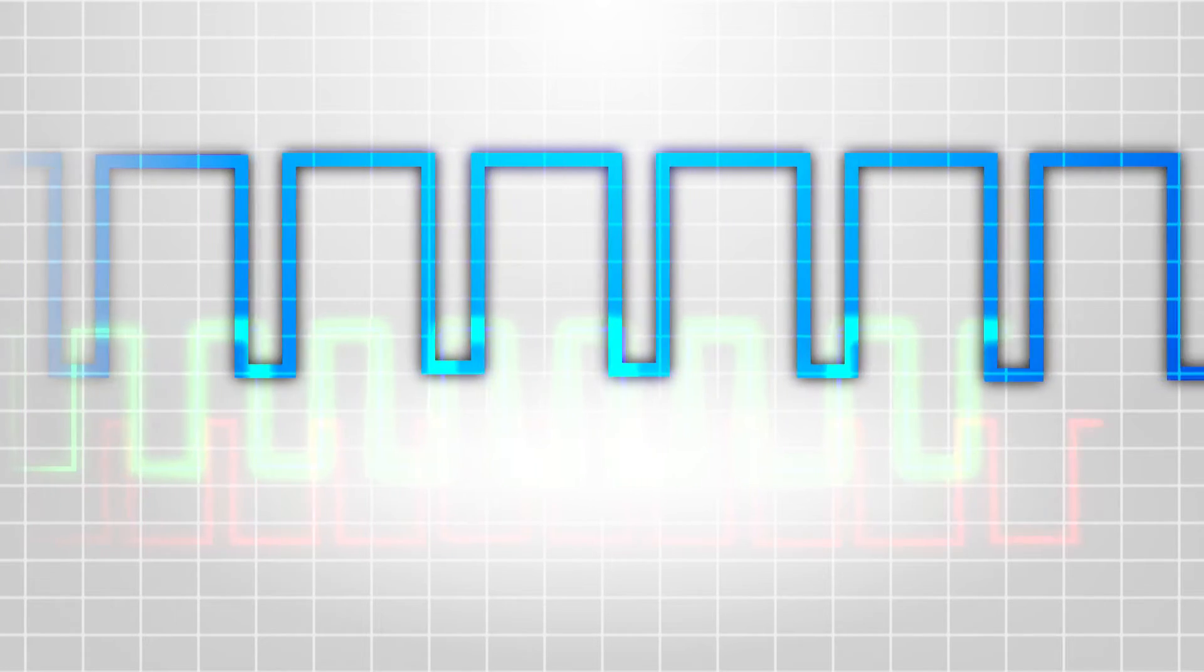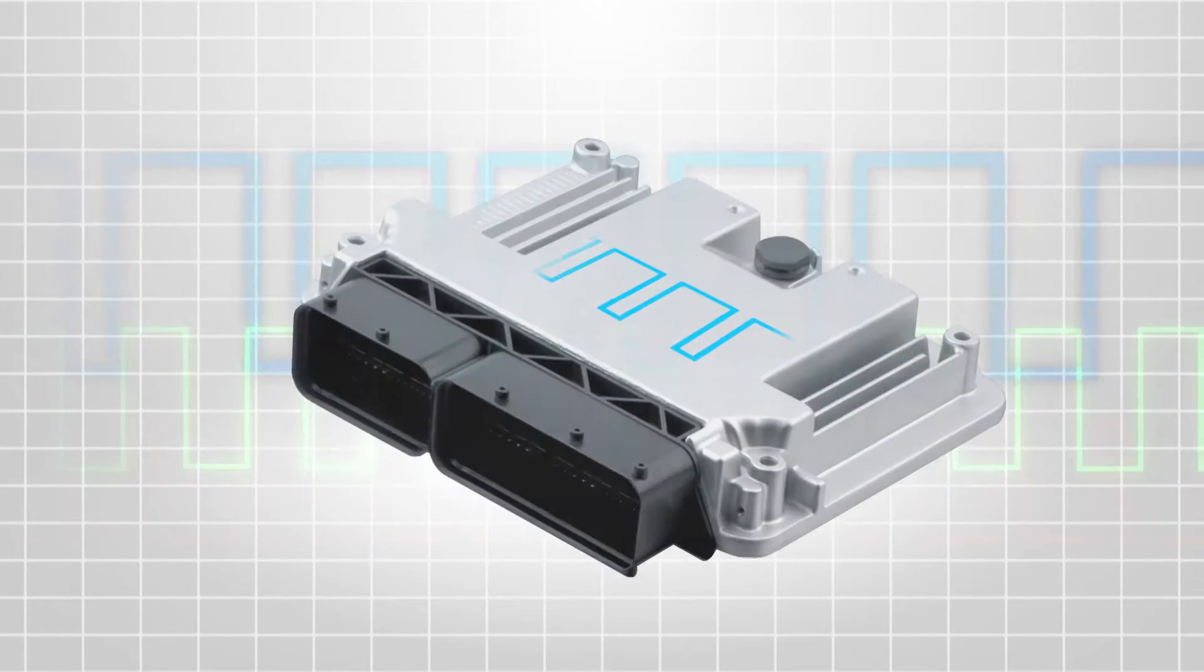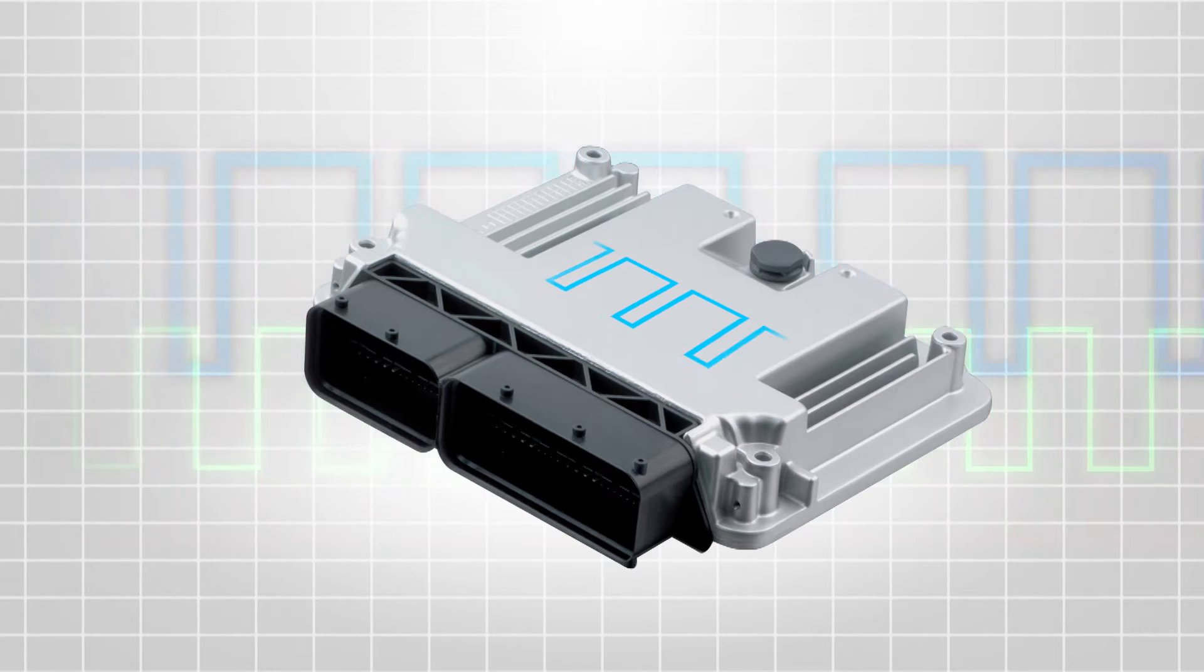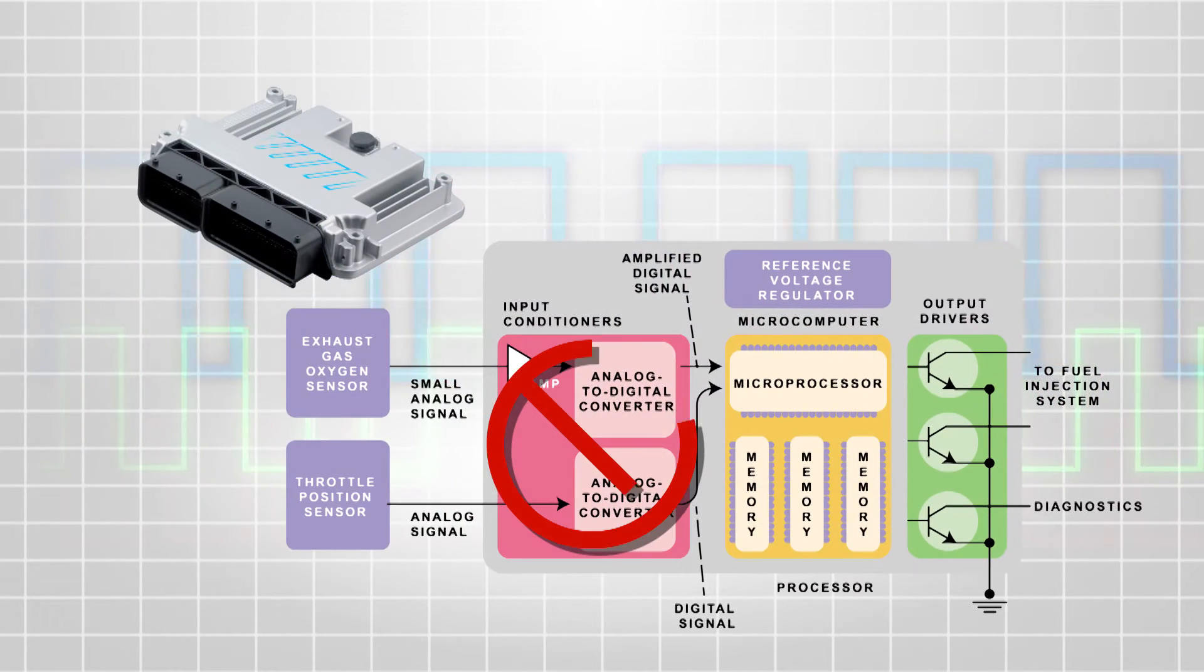PWM is perfect as an input or output for a control module because it's digital. As an input, there's no need for an analogue to digital converter.